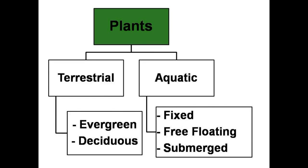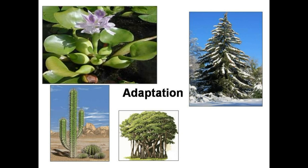Plants living in different environments look different. Just like we need to adjust to where we live, plants need to adjust to their environment too. This process of making changes in themselves to adjust to their surroundings or habitat is called adaptation.